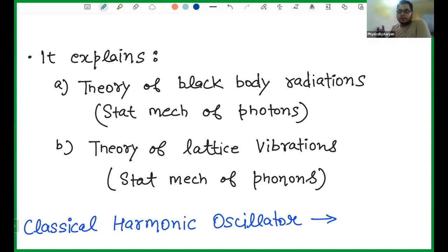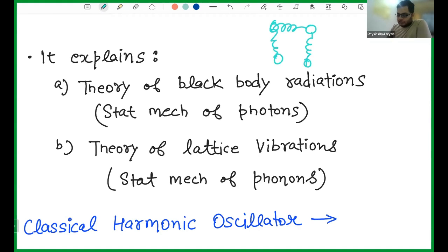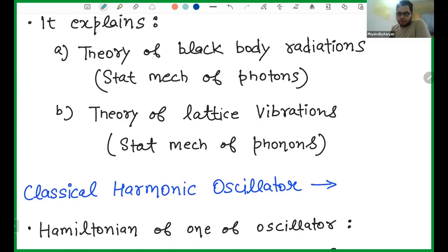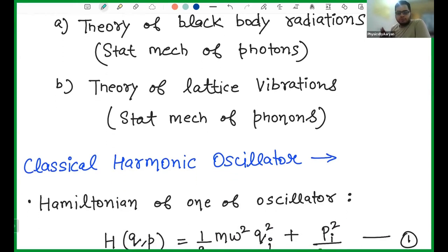Your lattice vibrates and each atom is supposed to be connected — the atoms are connected to each other through a spring. It is modeled such that we assume atoms in the material are connected to each other through springs. So the calculations we are going to develop here are also very important for that. We will be looking at it from two points of view and both points of view are important.